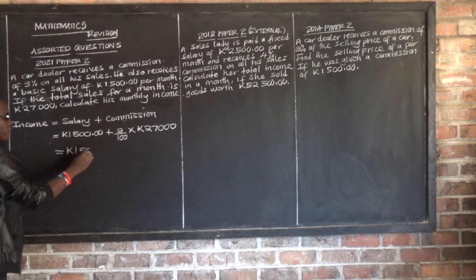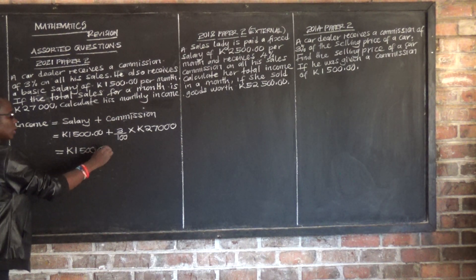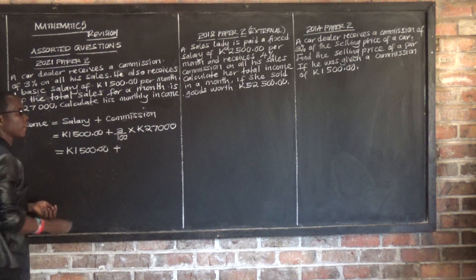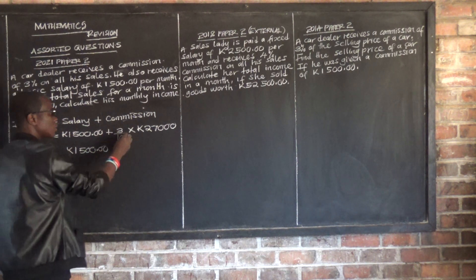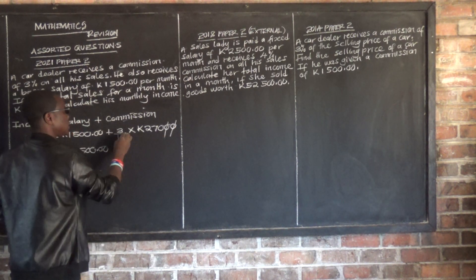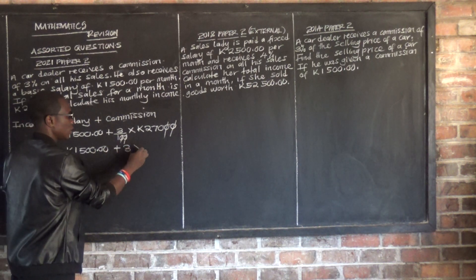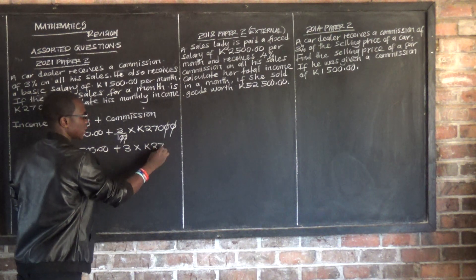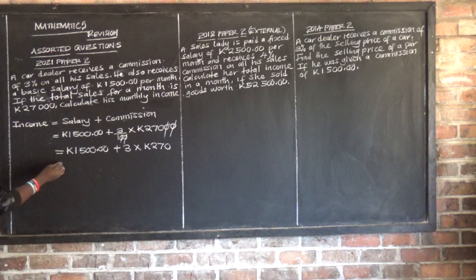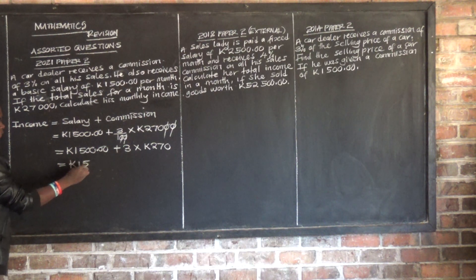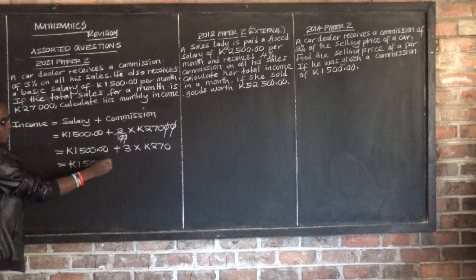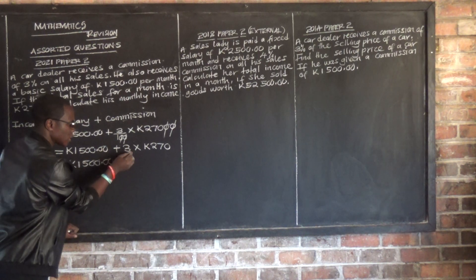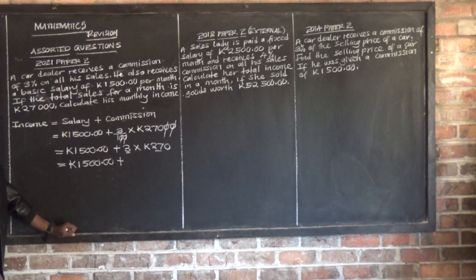You maintain the basic salary of $1,500, then plus the commission. We can cancel out zeros: one zero from the 100 and two zeros from the 27,000, so we are left with 3 multiplied by 270. We know that 3 times 27 equals 81.